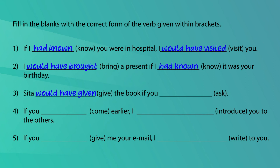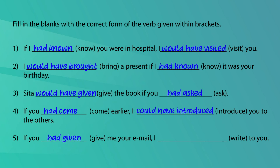Third one: "Sita ___ give the book if you ___ ask." Answer: "Sita would have given the book if you had asked." Fourth one: "If you ___ come earlier, I ___ introduce you to the others." Answer: "If you had come earlier, I could have introduced you to the others" — here "could have introduced" is used to indicate a missed possibility. Last one: "If you ___ give me your email, I ___ write to you." Answer: "If you had given me your email, I would have written to you." I hope you could get all correct.